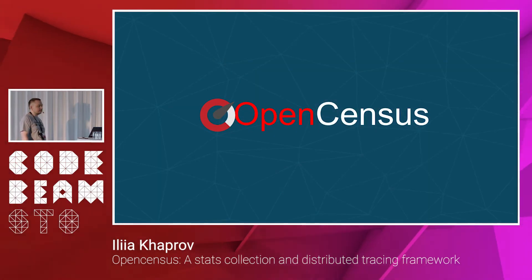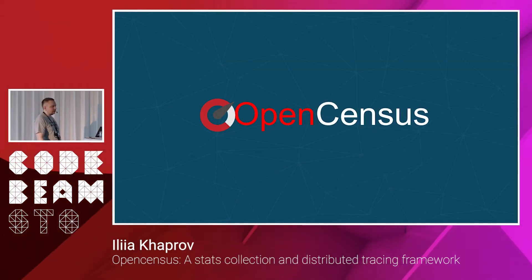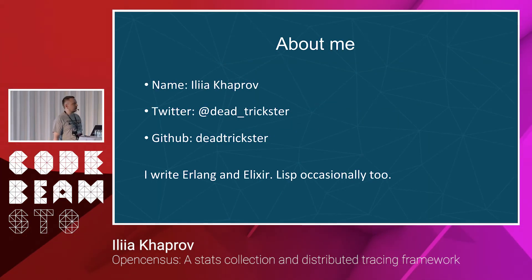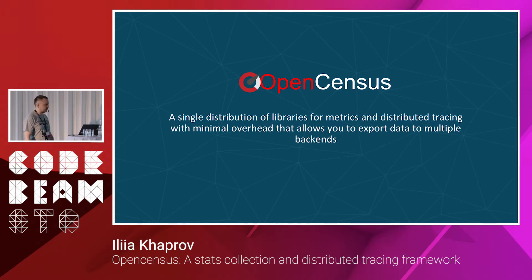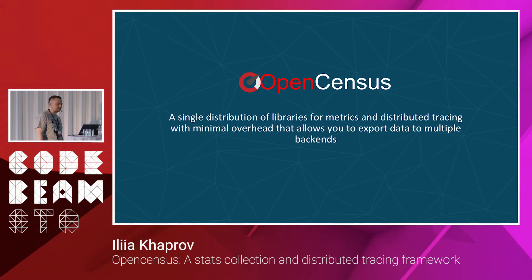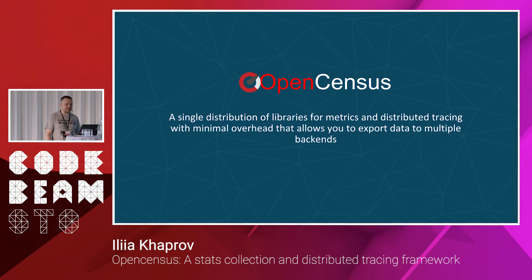Today we'll be talking about OpenCensus. A little bit more about me: I'm a dead trickster on GitHub and Twitter. I write Erlang and Elixir, and common list mainly occasionally too. So OpenCensus — let's start with the definition. It's a single distribution of libraries for metrics and distributed tracing with minimal overhead that allows you to export data to multiple backends.